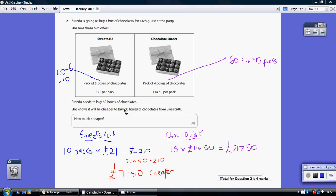Question 2. We're told it's cheaper to buy boxes from Sweets for You, but we need to see by how much. Brenda needs to buy 60 boxes.